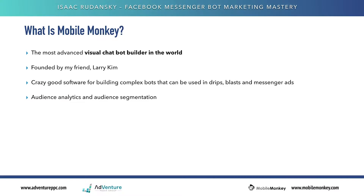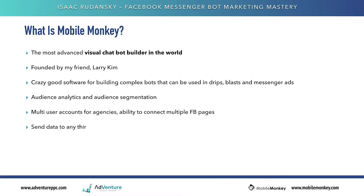In previous lectures we went through a few different examples of what things like that would look like. You have the ability through MobileMonkey to create multi-user accounts for agencies and connect multiple Facebook pages. You can also send data to third-party services — if you're running webinars using GoToWebinar or Zoom, or you want to send data to a Google Sheet, HubSpot CRM, or any other CRM, all that is very easy to do.